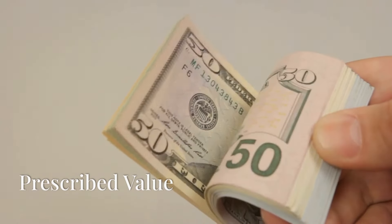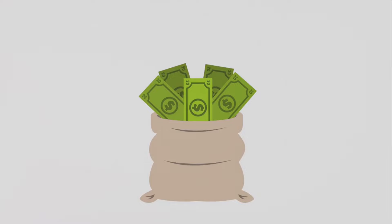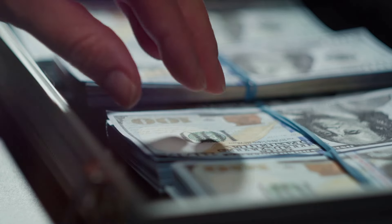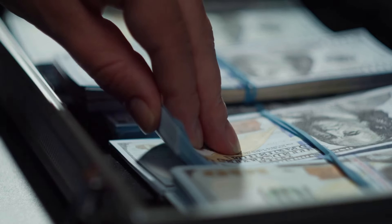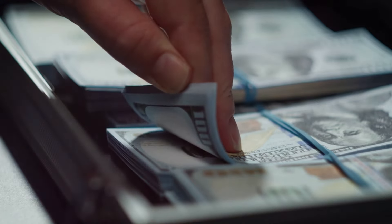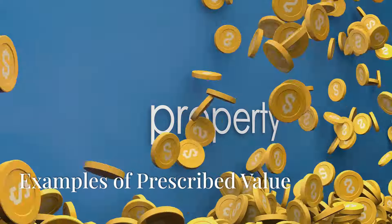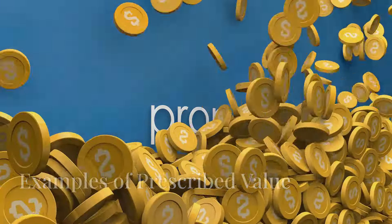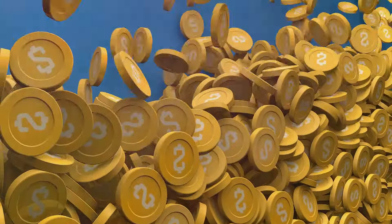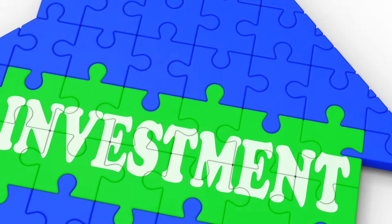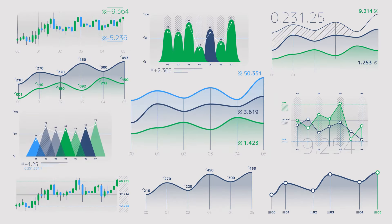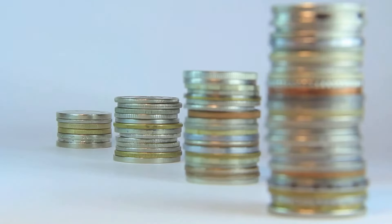The NRP must have an interest in an asset exceeding £31,250 after mortgage or charge deductions. If multiple assets are held, their values aren't combined to meet the threshold. For example, NRP Alex owns land worth £20,000 and shares worth £20,000 — these don't meet the £31,250 threshold individually.